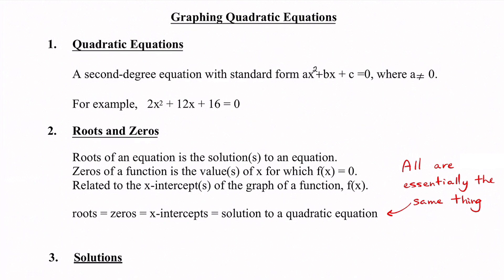Next we're going to look at the different types of solutions we can get. We're going to be graphing a quadratic, which gives the shape of a parabola. If the parabola has one x-intercept it has one solution; if it has two x-intercepts it has two solutions. We're going to plot these and see how many solutions we can actually get — this is just to explore what we expect before writing them down.